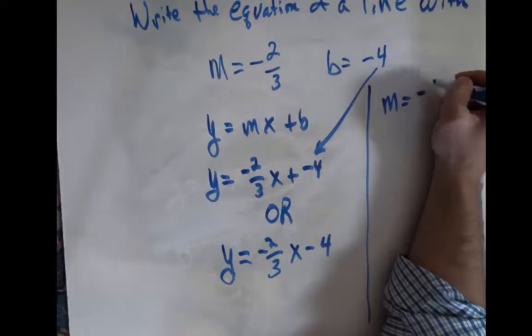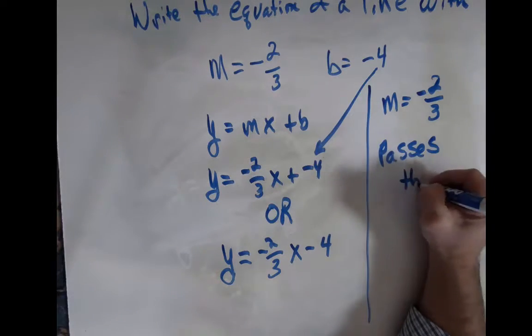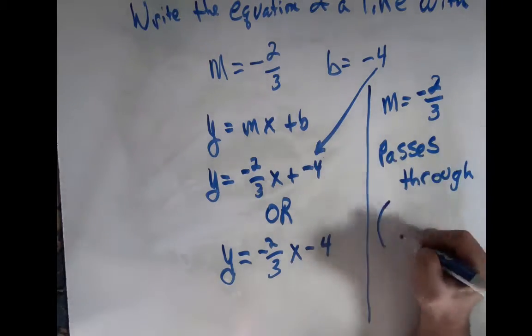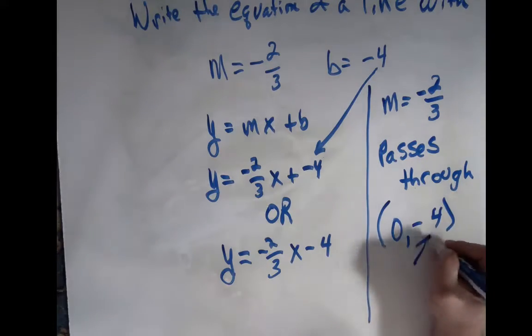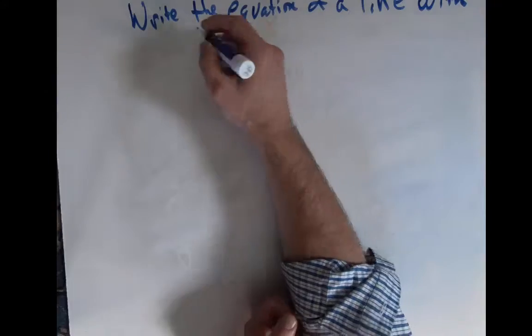And this could even be given a different way if it's at a slope of negative 2 thirds and passes through the point 0, negative 4. If it's 0, negative 4, that negative 4 is your y intercept or your b.